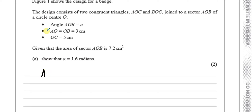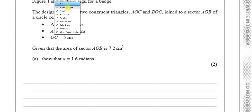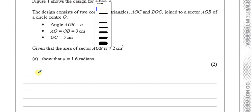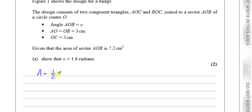We know that the area of the sector is given by the formula half R squared theta, when the angles are measured in radians. It doesn't really make sense to use the formula theta over 360 times pi R squared when you have to find your angles in radians, because there you get your angles in degrees and then have to change them to radians. Over here, this formula will automatically give you an angle in radians.